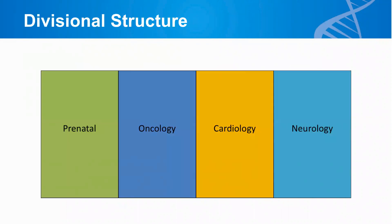Some companies are organized divisionally. Especially large labs in our space may have a prenatal division, an oncology division, and so on. These almost operate like mini-businesses in themselves, where each team will likely have a finance group and a sales and marketing group, but the reporting is up to someone within the same division — usually a president at the top of each division.